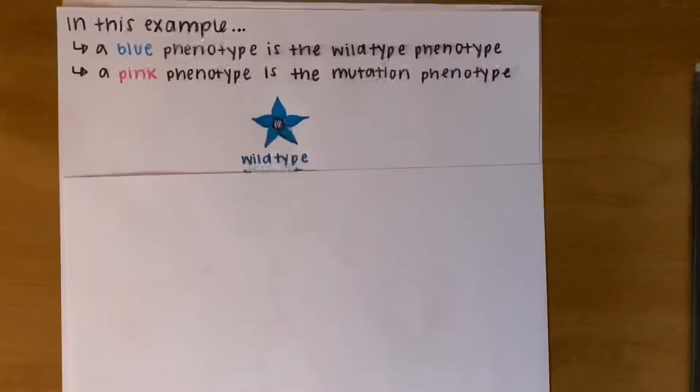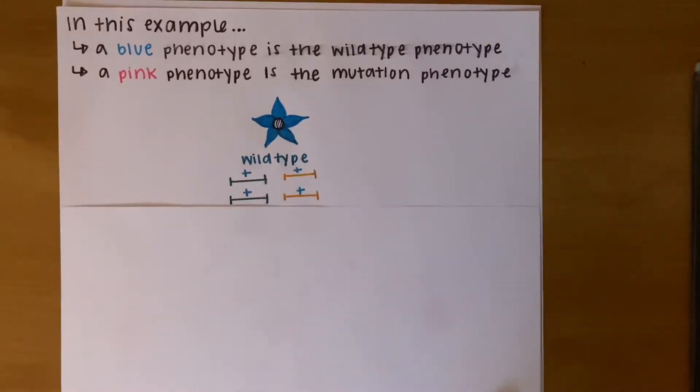Now, let's go through an example. For this example, let's assume that blue flower petals will be the wild type phenotype and pink petals will be the mutant phenotype. If we could see the alleles that contribute to the different petal colors, they would look a little bit like this.